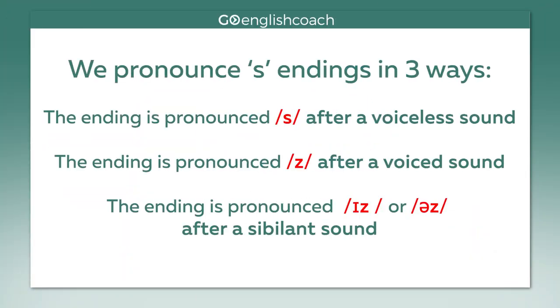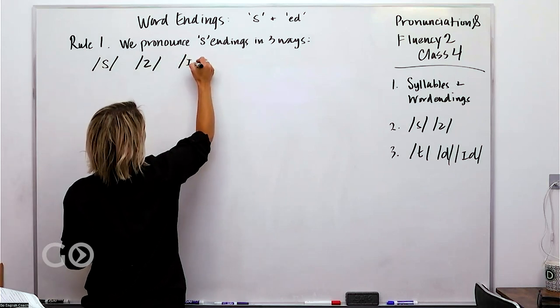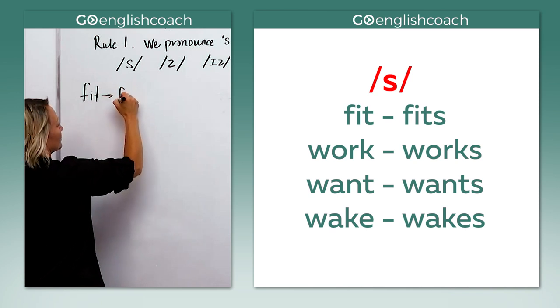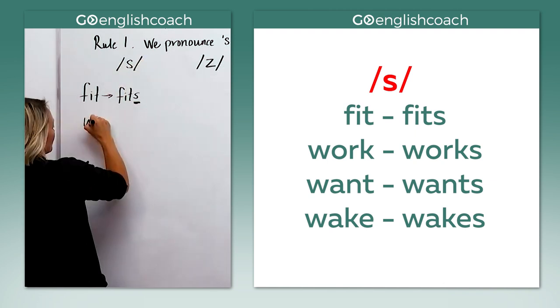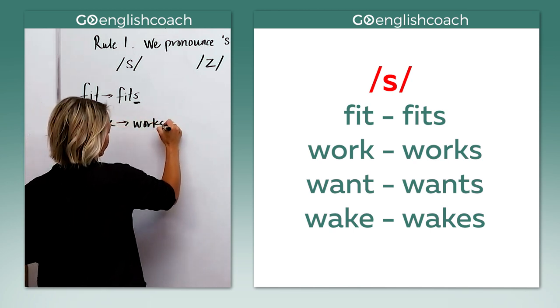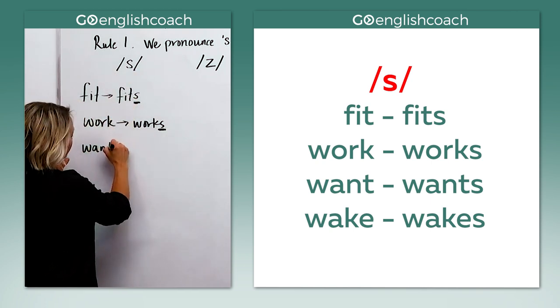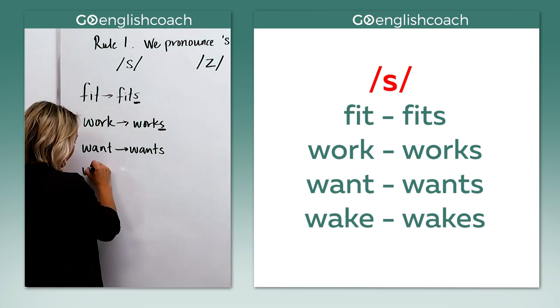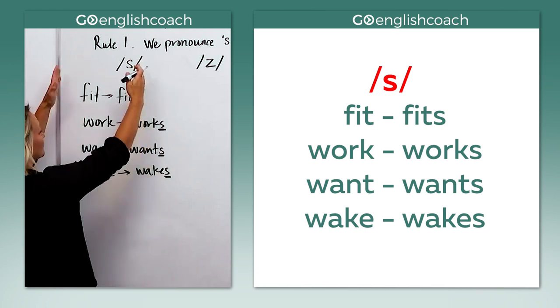We've got a rule about word endings. We pronounce S endings in three ways. We use three different sounds for endings. We've got S, a Z sound, or an I with a Z sound. So let's see. For example, if we say fit and we make it plural, it's fits. So the pronunciation of that final sound here is S. Work goes to works. And the pronunciation there, work works, just an S sound. Want, wants. Perfect. And let's do one more. Wake and wakes. So these final S sounds in each one is an S.